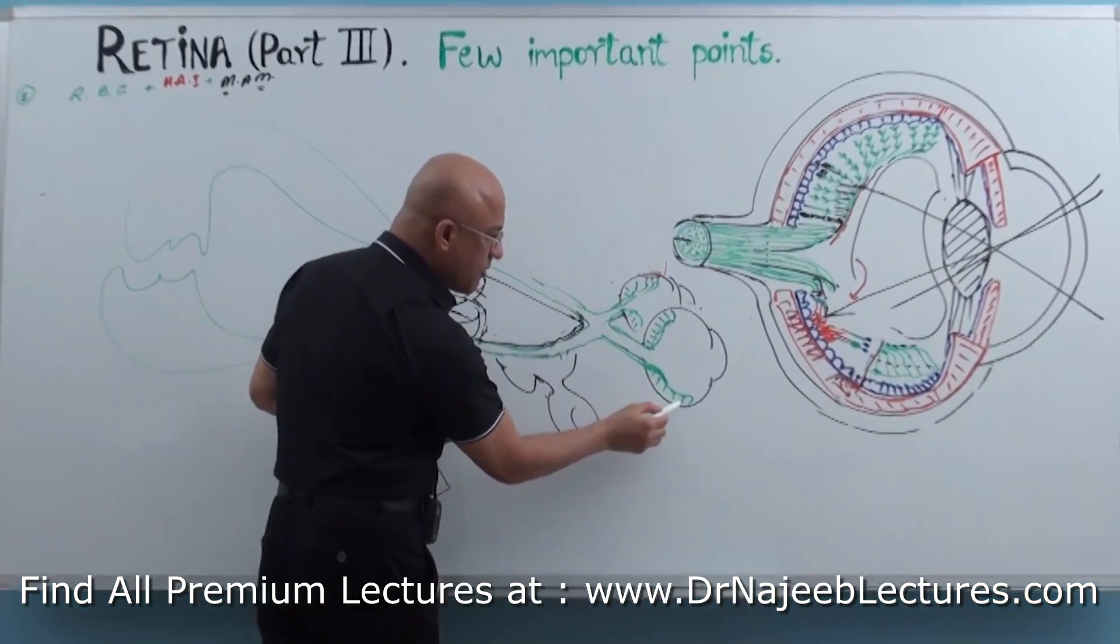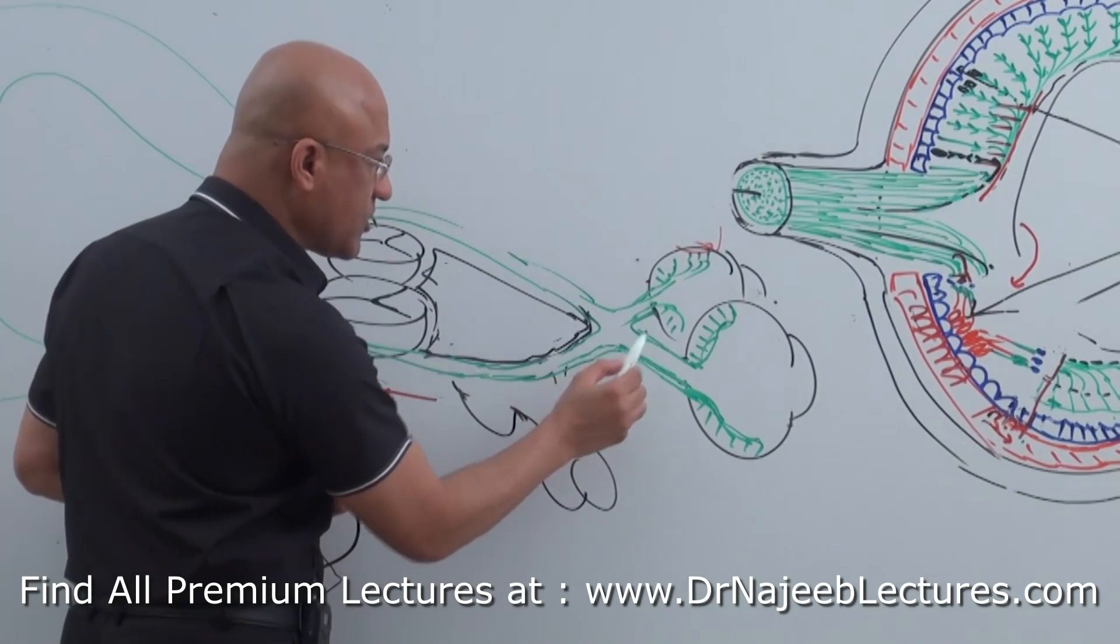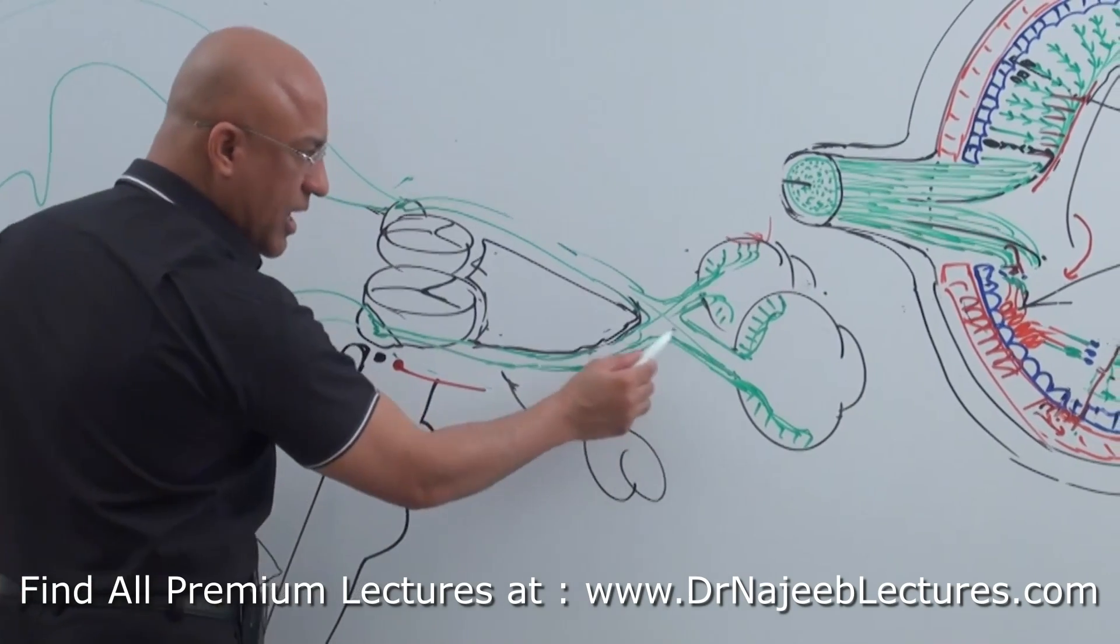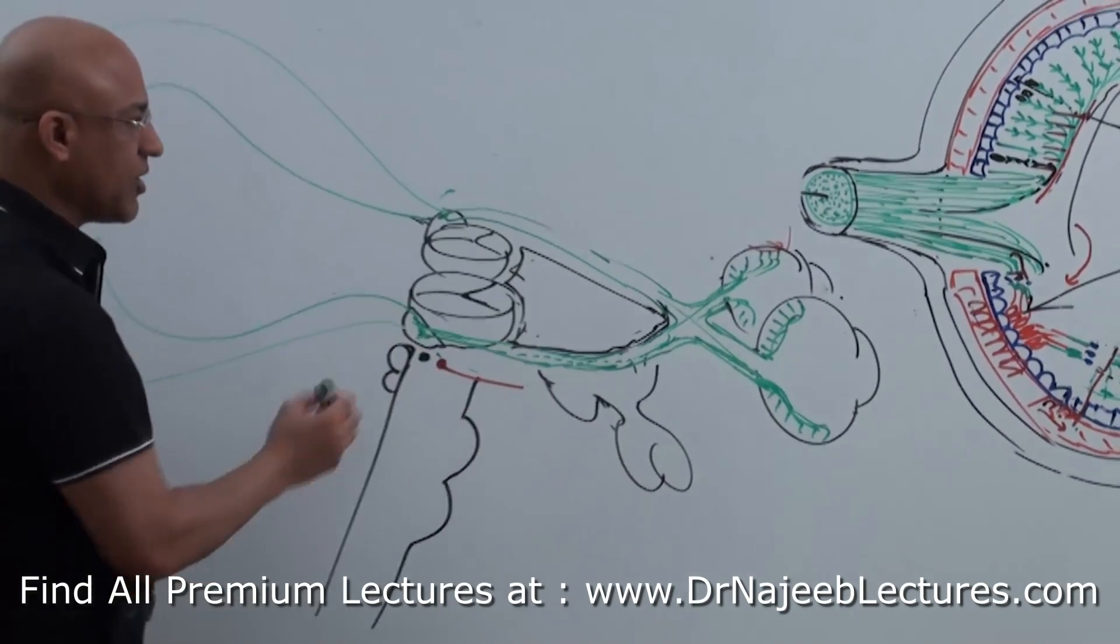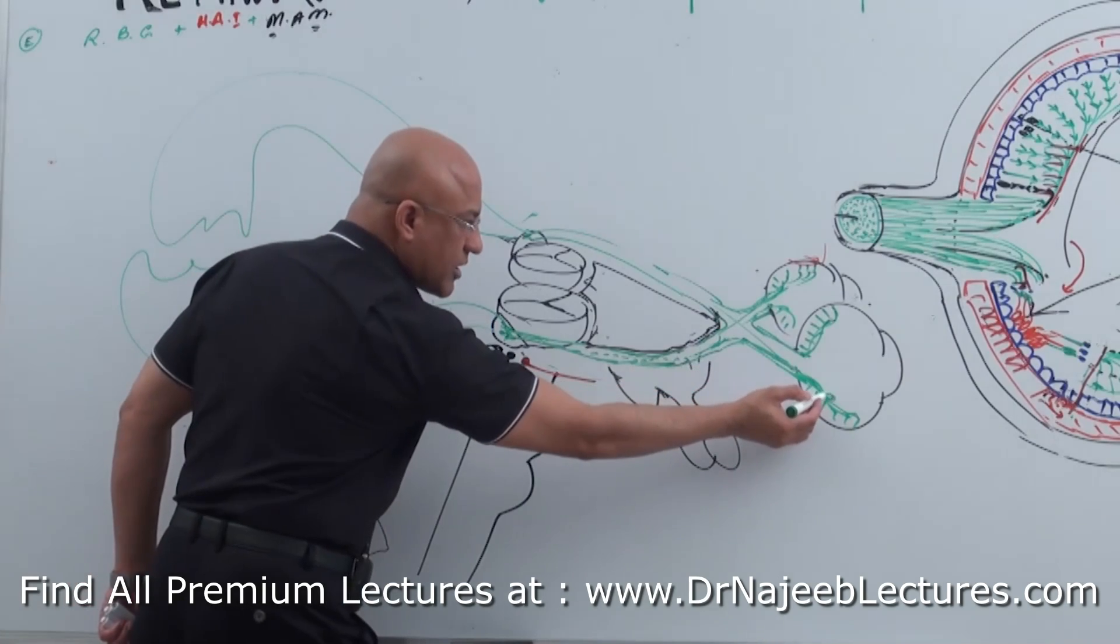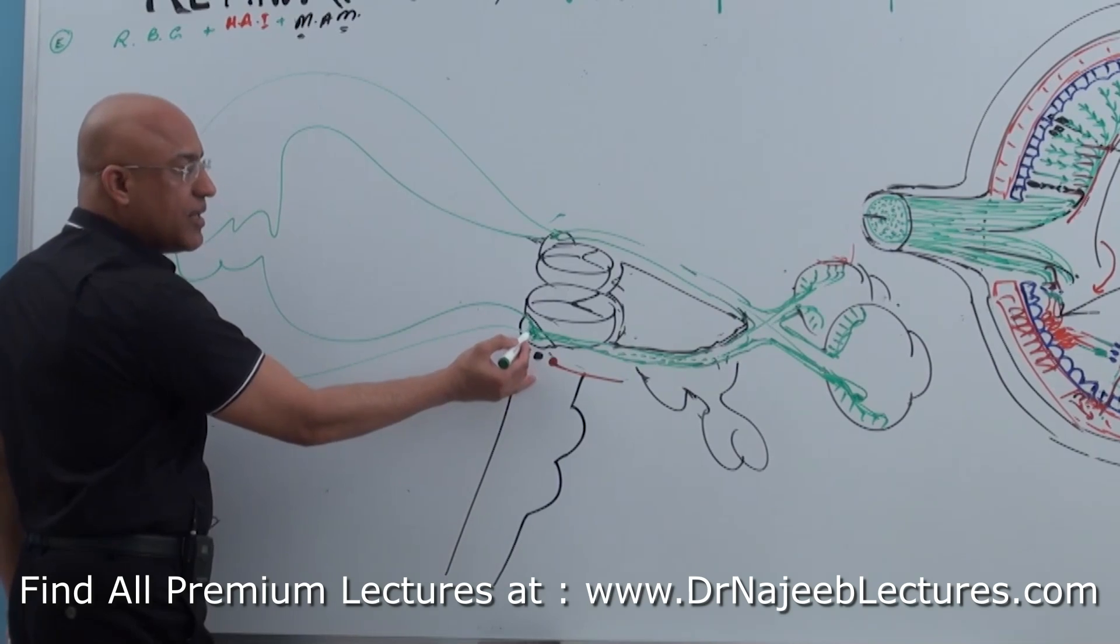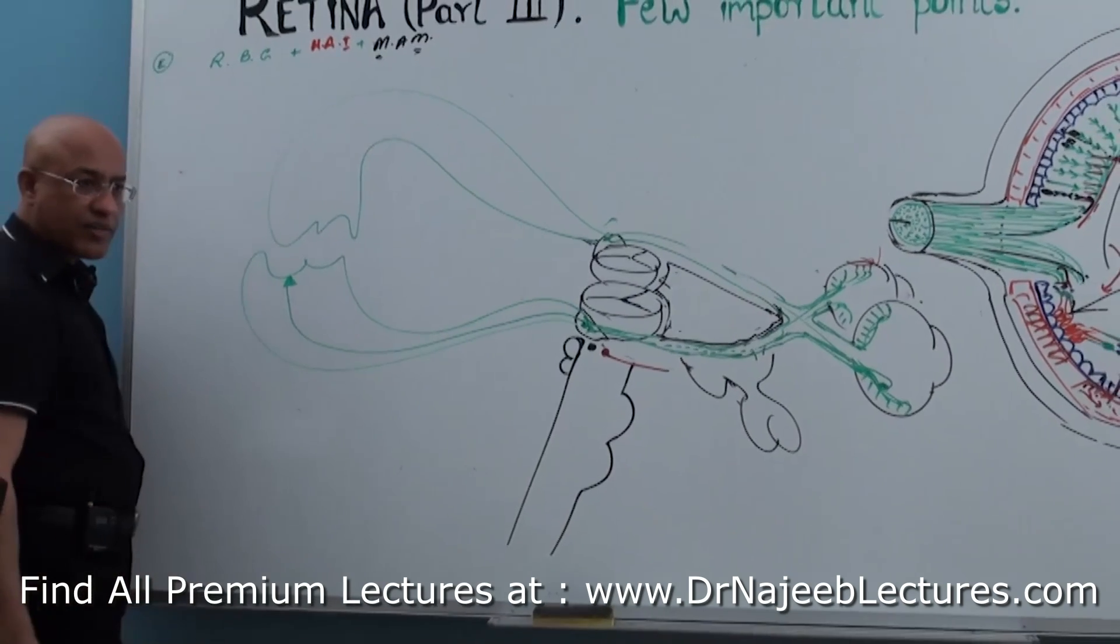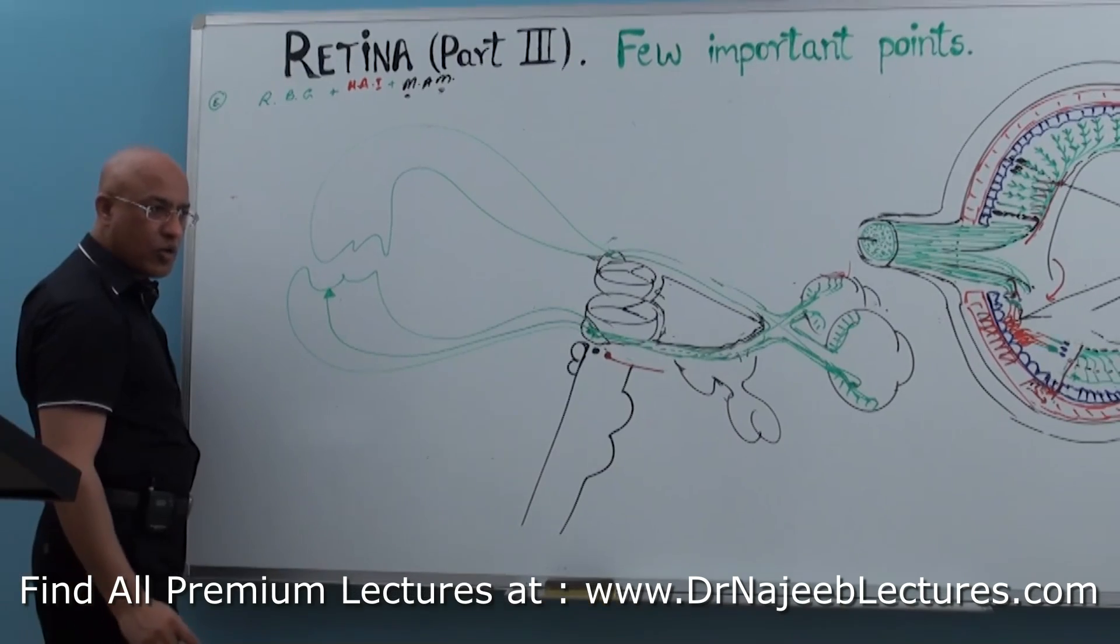This green pathway starts from here - from rods and cones, bipolar cells and ganglion cells. And this will go to the central nervous system. As you know, some fibers will cross over here. First optic nerve, then optic chiasma, then optic tract. They finish at lateral geniculate body. The ganglion cell axons start from here and reach up to lateral geniculate body. From here, next fibers start and go to the visual cortex. Where is the calcarine fissure? At the occipital lobe.